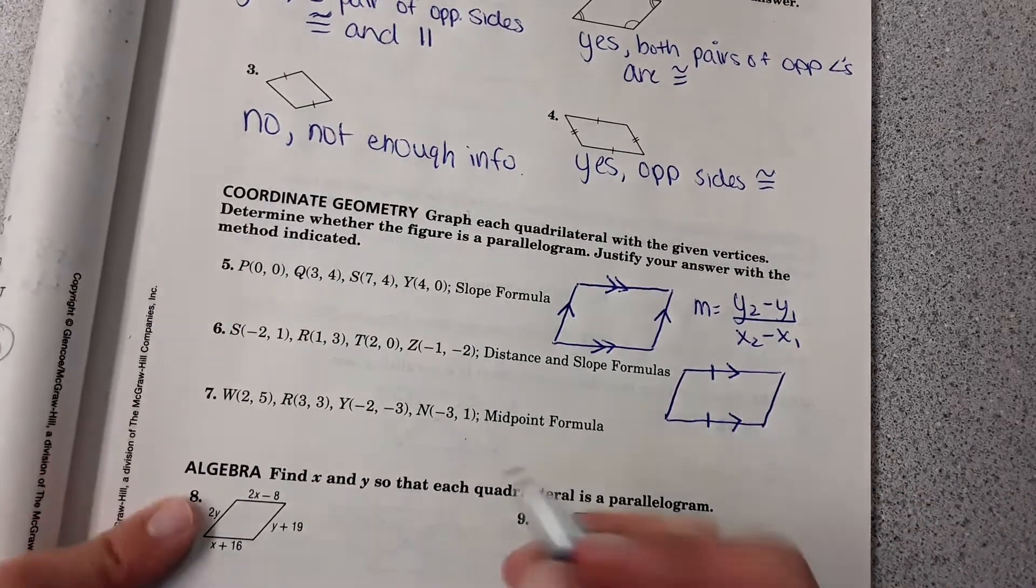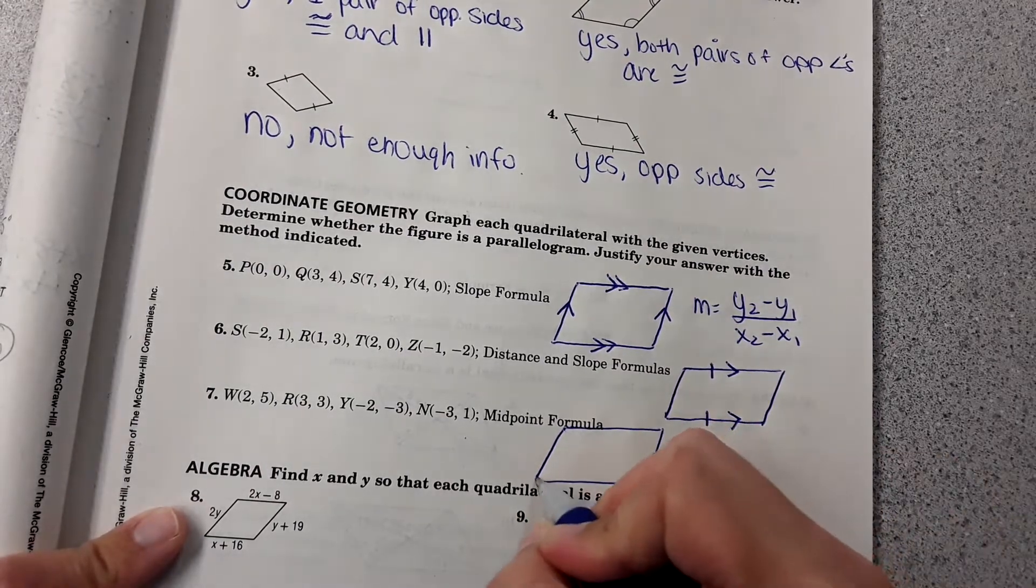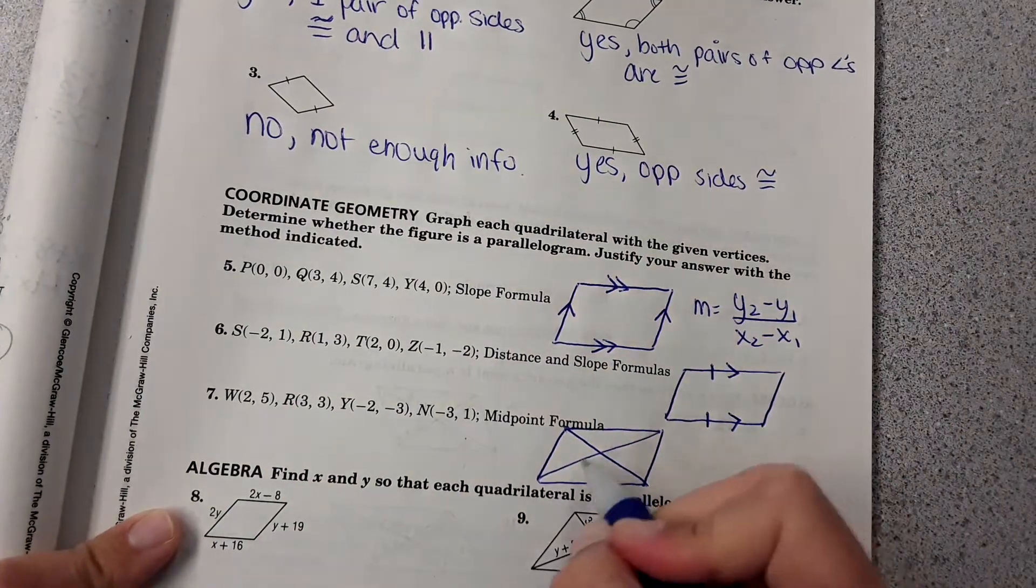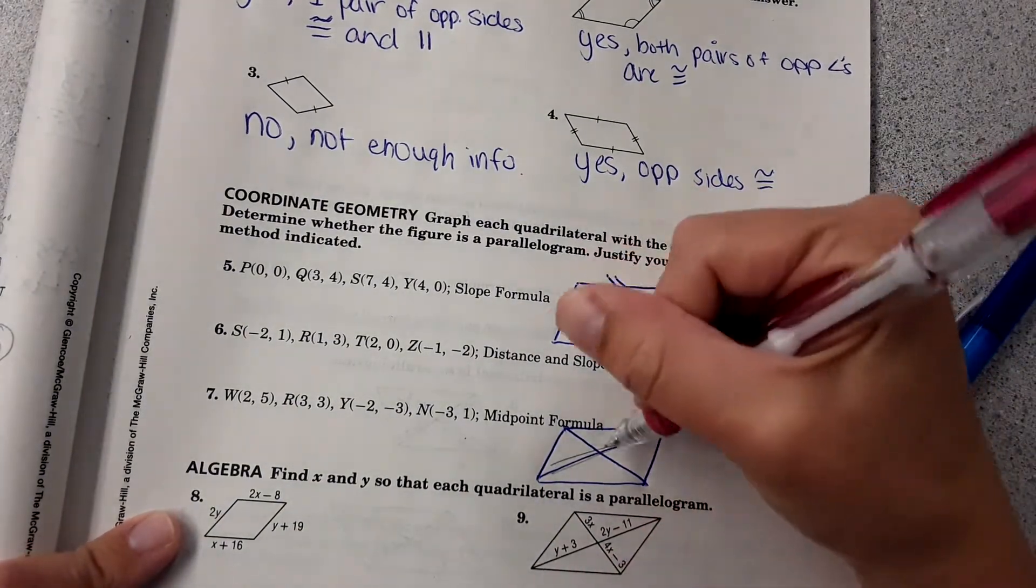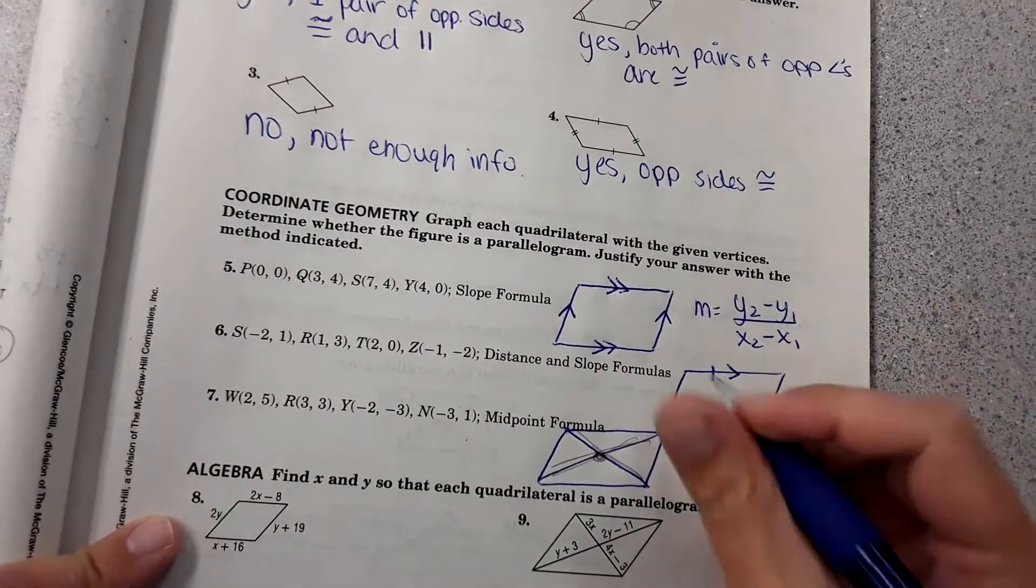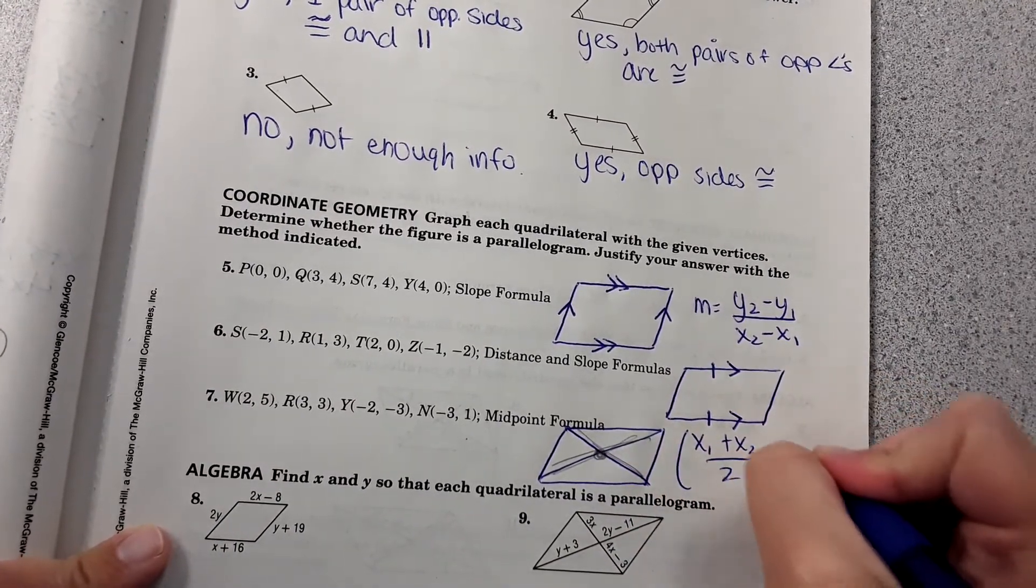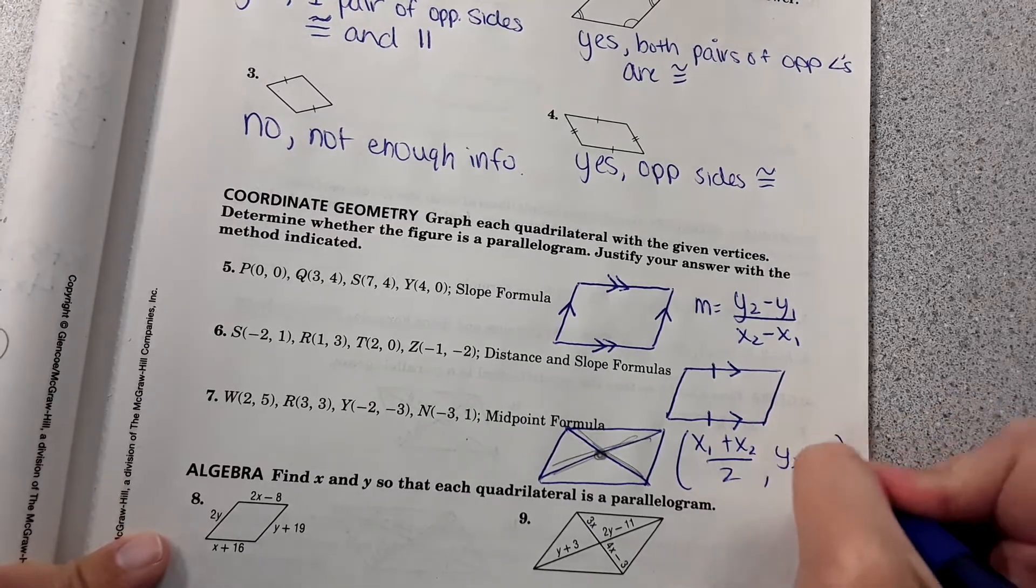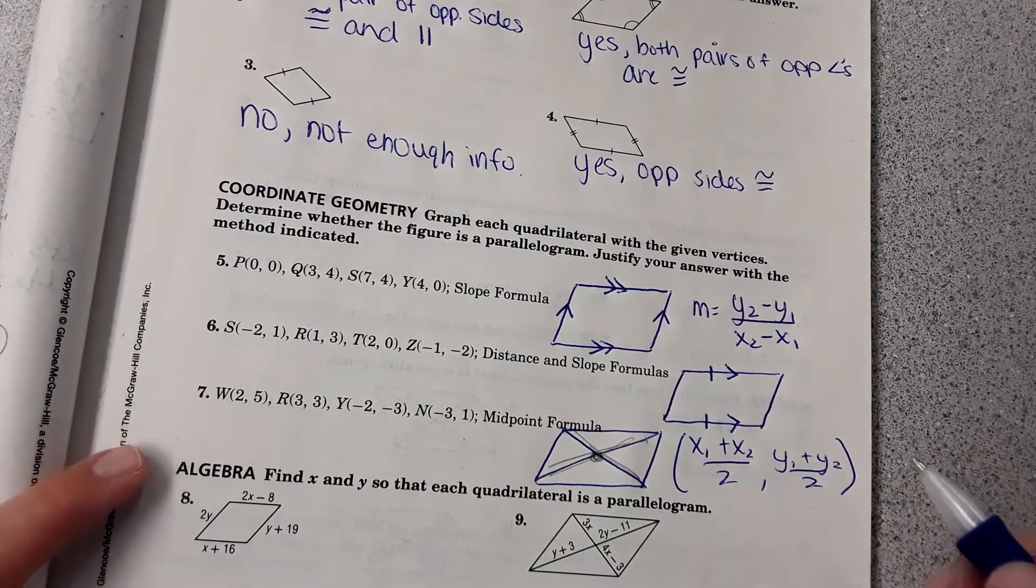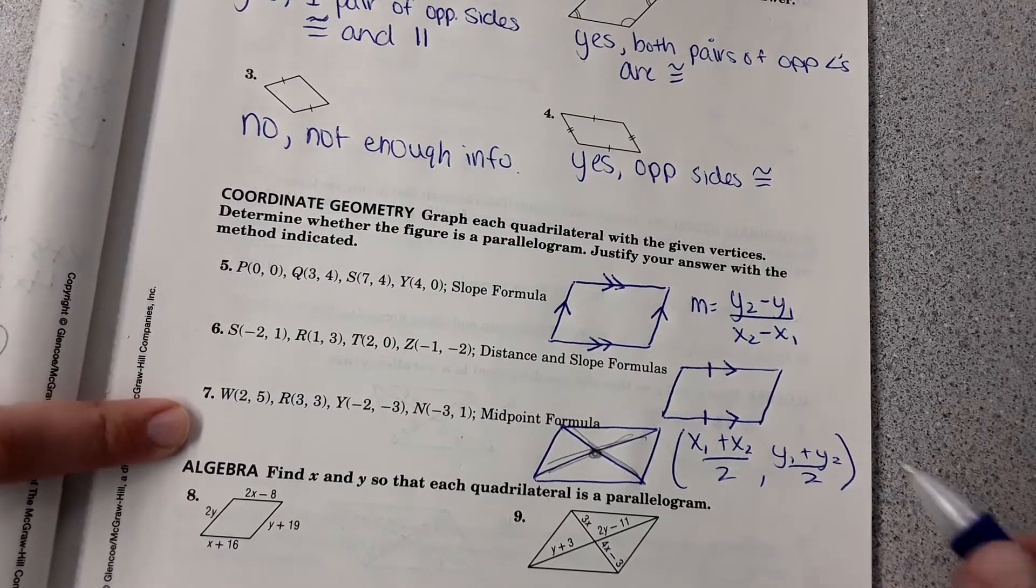And 7, midpoint formula. If you were to graph a parallelogram and the diagonals bisect each other, then the midpoint of this segment and this segment would fall at the same spot. So the midpoint formula is x1 plus x2 over 2 and y1 plus y2 over 2. I didn't include many of these on the homework, maybe one or two. If you get them, this is how you would do it. But honestly, I would graph it first, see if I could figure it out before I did all of this.